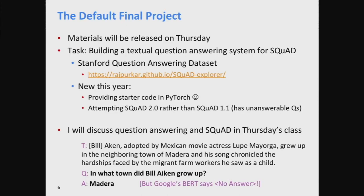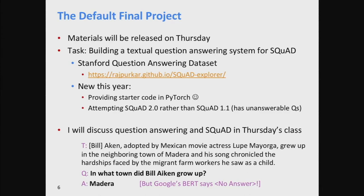Let me just mention quickly the default final project so you've got some sense of context. The materials will be released this Thursday. The task is a textual question answering task done over the Stanford Question Answering Dataset — SQuAD — which was put together by Percy Liang and the department. We've used this as a default final project before, but we're mixing up a couple of things this year.